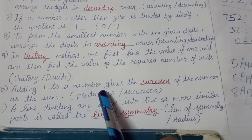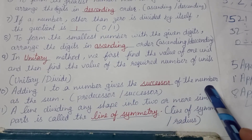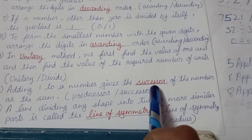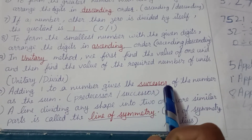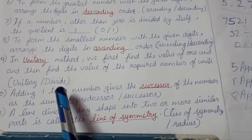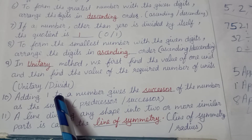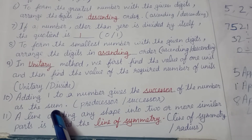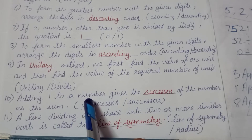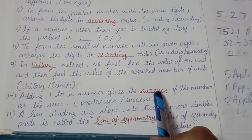Adding one to any number gives the successor of that number. The answer of addition is called the sum. So when we add one to any number, the sum we get is the successor of that number.